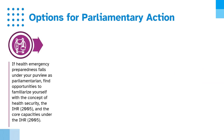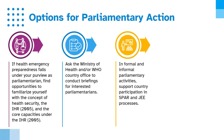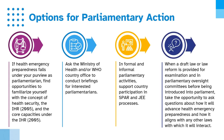Some options for Parliamentary action: If health emergency preparedness falls under your purview as a parliamentarian, find opportunities to familiarise yourself with the concept of health security, the International Health Regulations and the core capacities under the IHR. Ask the Ministry of Health and/or the WHO country office to conduct briefings for interested parliamentarians in formal and informal Parliamentary activities. Support country participation in SPA and JEE processes. When a draft law or law reform is provided for examination in Parliamentary oversight committees before being introduced into Parliament, take the opportunity to ask questions about how it will advance health emergency preparedness and how it aligns with any other laws with which it will interact.